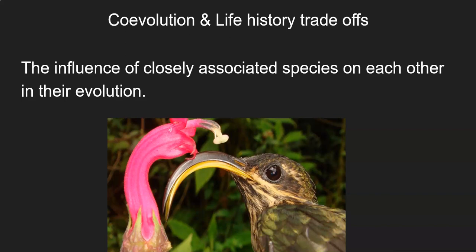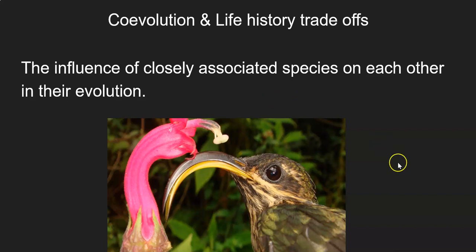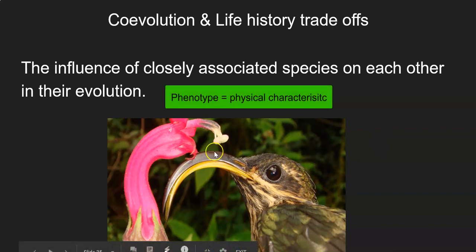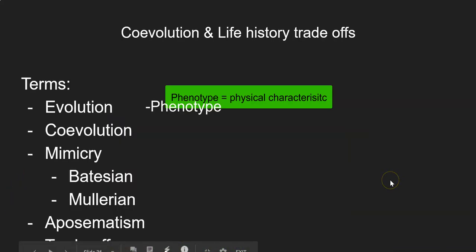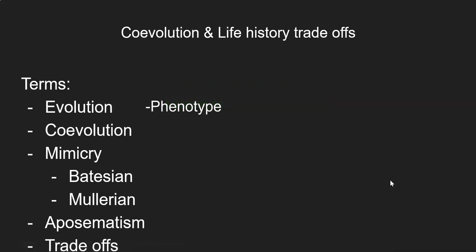Today we're going to be talking about co-evolution and life history trade-offs. These are two separate categories. They certainly can be connected, but they are two different things. A great example of co-evolution would be this bird here and this flower, both of which have really extreme phenotypes, and they have driven each other to these phenotypes because of co-evolution. Let's look at our key terms for today.